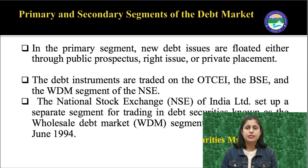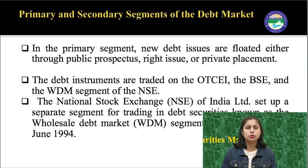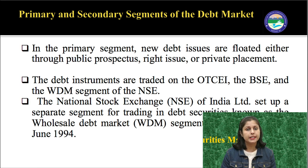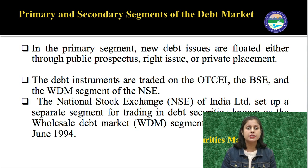Next we discuss the primary and secondary segments of the debt market. In the primary segment, new debt issues are floated either through public prospectuses, right issue, or private placement. In the secondary market, debt instruments are traded on the OTCEI — that is the Over-the-Counter Exchange of India — the BSE, and the wholesale debt market segment of the NSE. The National Stock Exchange of India set up a separate segment for trading in debt securities known as the wholesale debt market segment in June 1994.